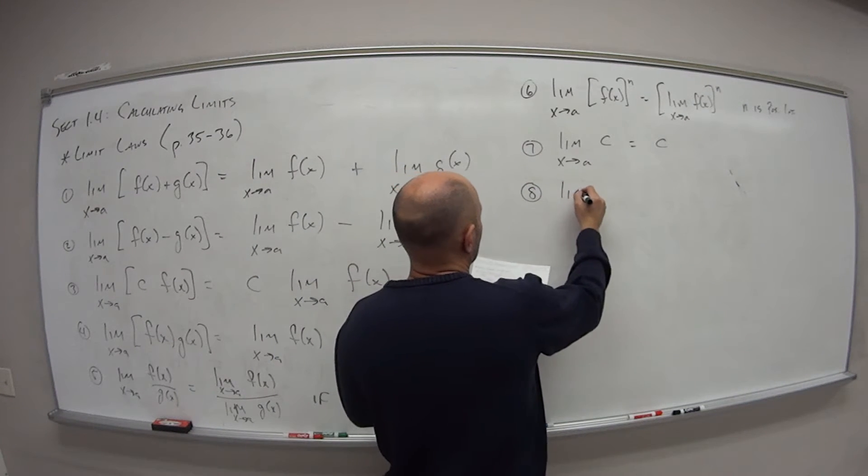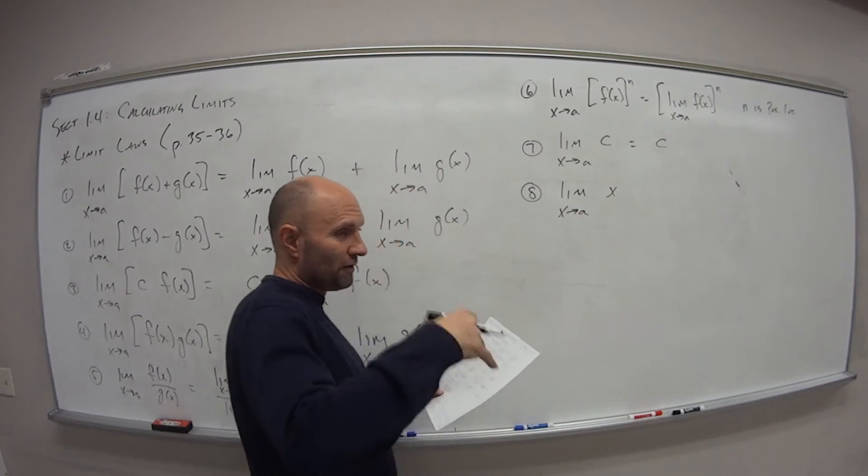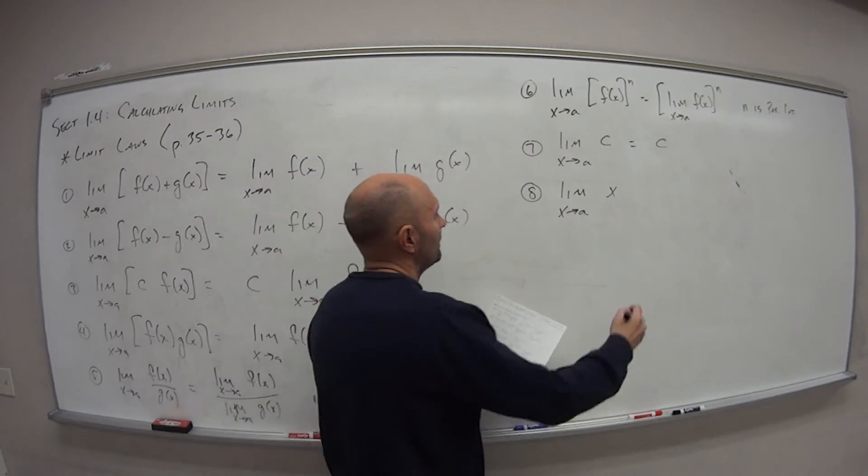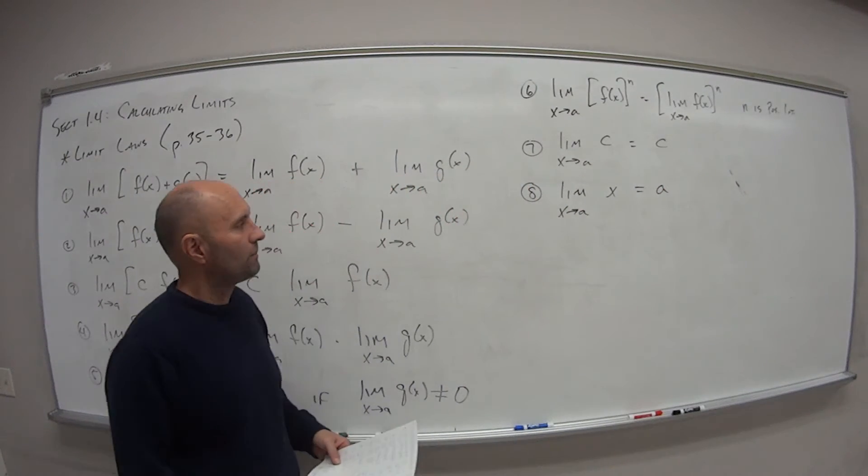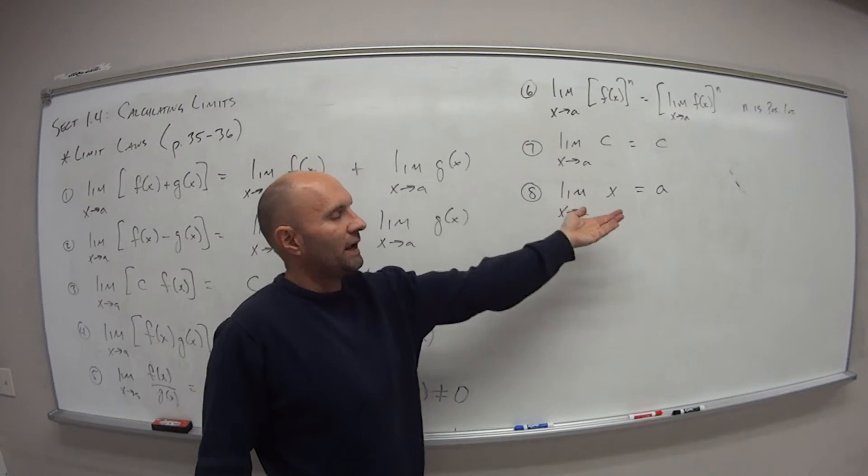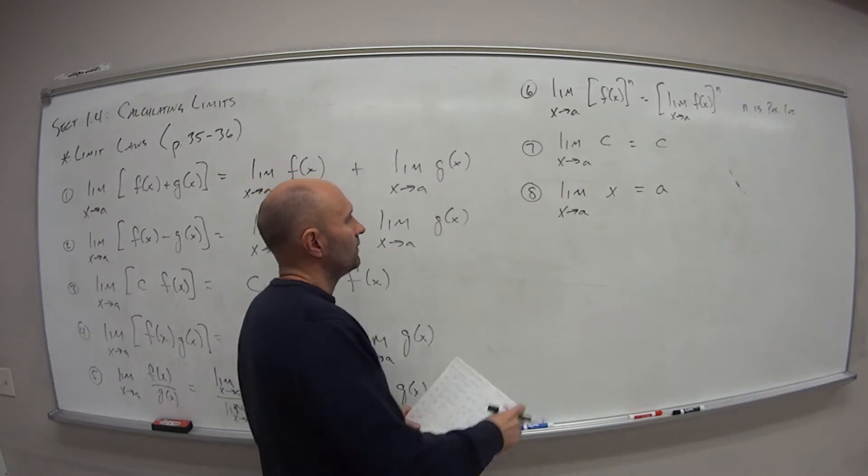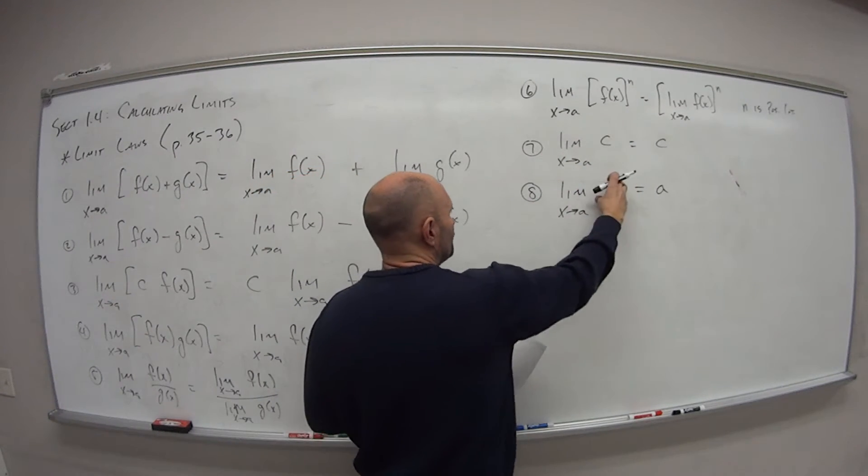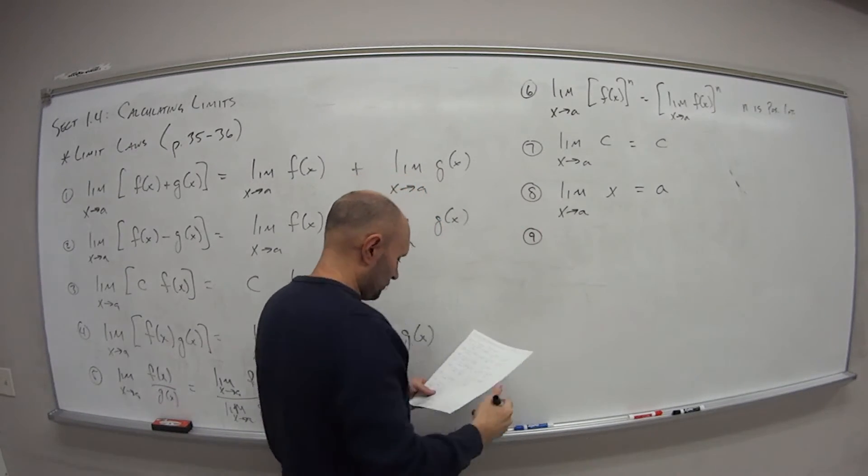The limit as x approaches a of a function, just x, is equal to just that value a. So if my function is x, as x approaches one, my answer is one. If x approaches eight, my answer is eight. So the limit as x approaches a of just the function x is equal to this value a that we're approaching.